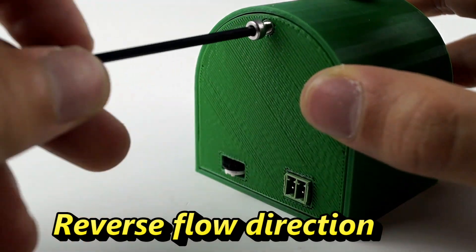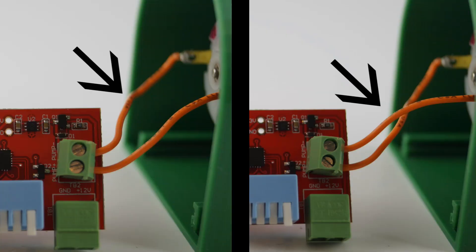It is easy to reverse the flow of the pump by popping off the back cap and swapping the two orange wires connected to the motor.